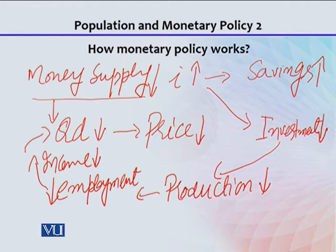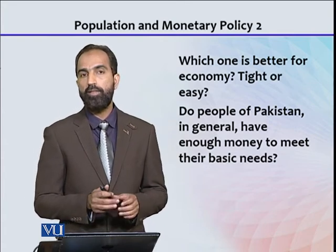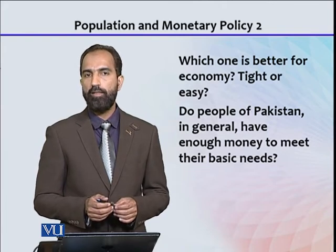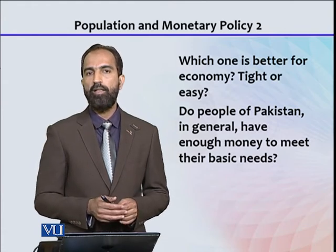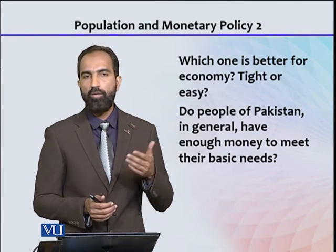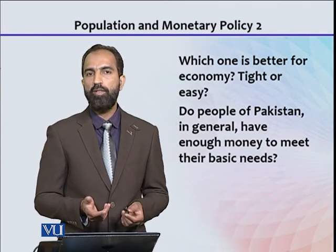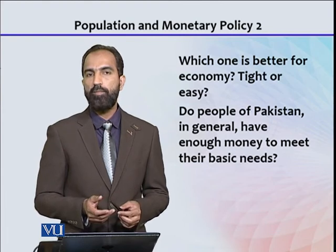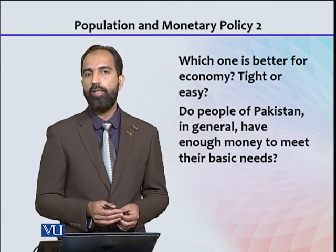Simply put, in tight monetary policy, the rate of interest is raised and money supply is controlled, with the purpose of reducing prices. However, in Pakistan, prices of many things increase due to their shortage. For example, demand for electricity in Pakistan is high while its supply is low. If you take money away from people or raise the rate of interest, people will not reduce their demand for electricity. When a shortage of something is not resolved, how can its prices decrease? The ultimate solution is to increase production and facilities — when supply increases, prices will fall.